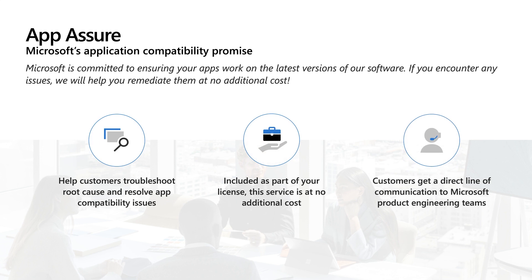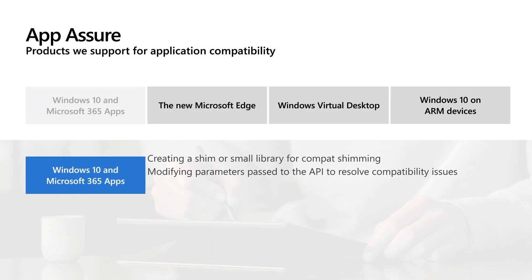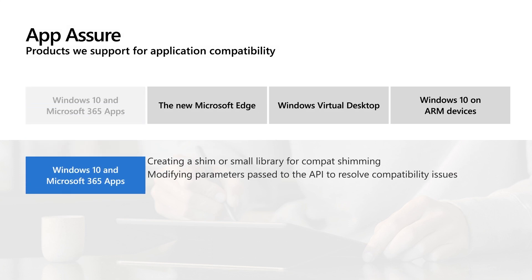We work directly with you to troubleshoot and find the root cause of an application issue, then determine how to fix it. If it's an issue with a product like Windows or Office, we work with Microsoft product teams to fix it. In some cases there are problems with third-party apps where we work directly with the software vendor. Or it might be an issue with your line-of-business application, so we can help fix your code or provide other mitigations. Our goal is to leave your business in a better state, making your apps future-proof and resilient to subsequent product updates using remediations that don't compromise the integrity of your application's security. We've also added promises to ensure app compatibility for Microsoft Edge and Windows Virtual Desktop, and App Assure now supports Windows 10 on ARM devices. For Windows 10 and Microsoft 365 apps, compat shimming and settings changes are a common fix for customer issues.